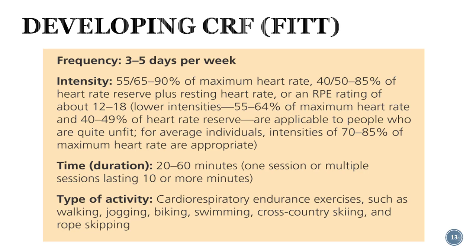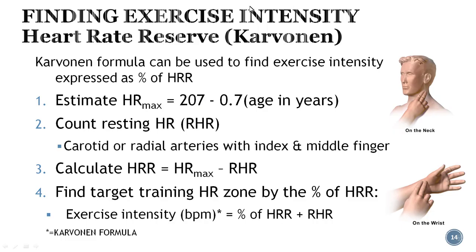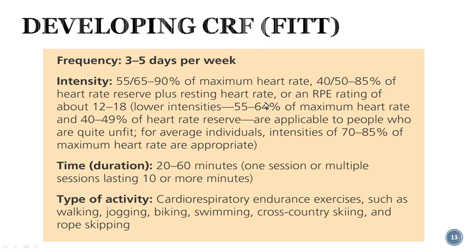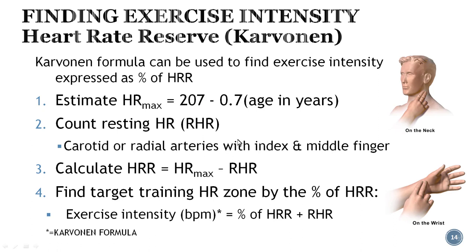Now let's look at intensity. The first method is heart rate reserve — 40/50 to 85 percent of heart rate reserve plus resting heart rate. This is one recommendation by the American College of Sports Medicine, also called the Karvonen formula. Heart rate reserve is the difference between your estimated maximum heart rate and your resting heart rate.